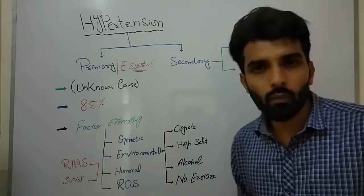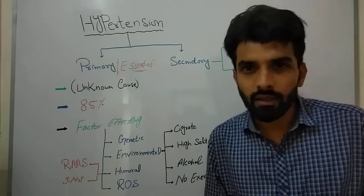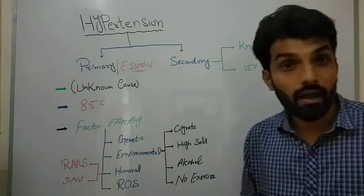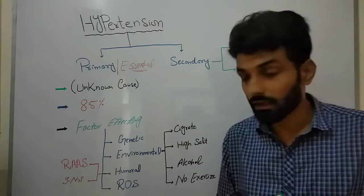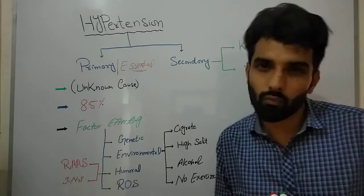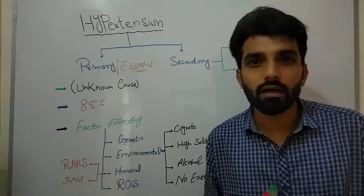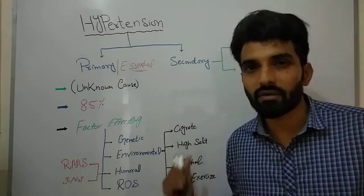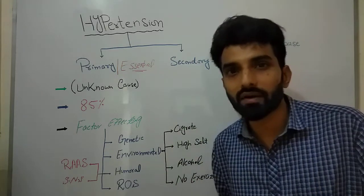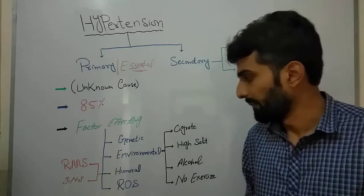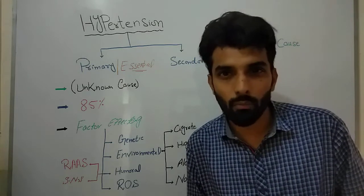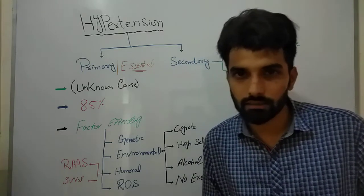Environmental factors include cigarette smoking, high salt intake, high alcohol intake, and lack of exercise. These are environmental factors that may also lead toward hypertension.